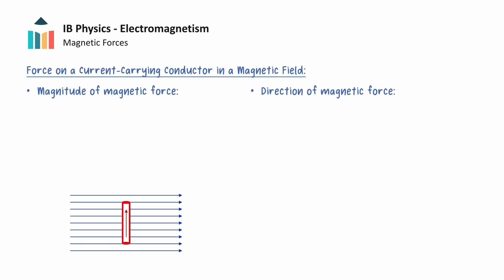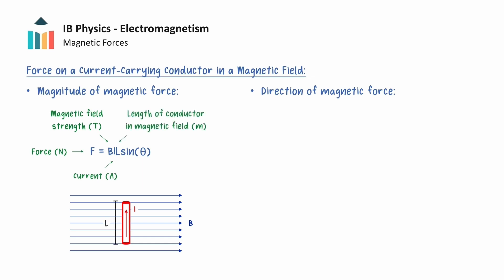Similar to the case of a moving charge, the magnetic force on the straight current-carrying conductor has an associated magnitude and direction. The magnitude is given by the following expression, where B is the strength of the magnetic field, I is the current in the conductor, and L is the length of the conductor that is in the magnetic field. The angle theta is the angle between the direction of the current in the conductor and the direction of the external magnetic field.